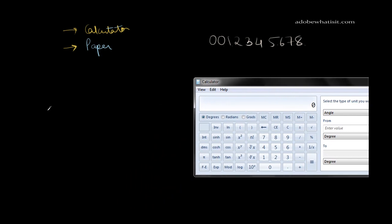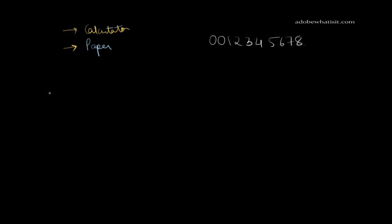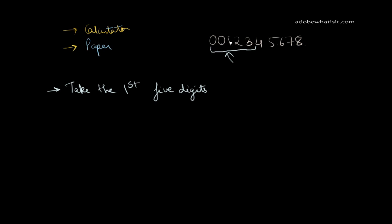I'll write down the steps. First, I want you to take the first five digits of your number and type them into your calculator. So these could be 1, 2, 3, 4, 5 — these digits right here. If this was your phone number, the digits you need to type on your calculator would be 0, 0, 1, 2, 3.